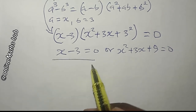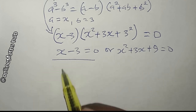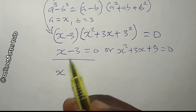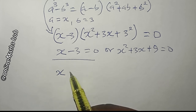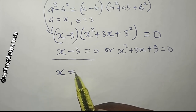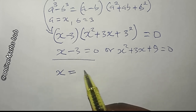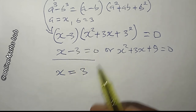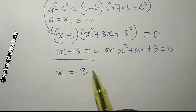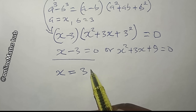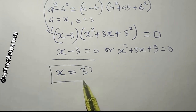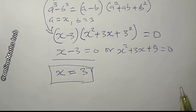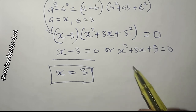Solving the first case, x minus 3 equals zero gives us x equals 3. This is the first value of x that satisfies the equation we are solving.